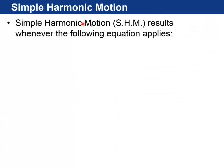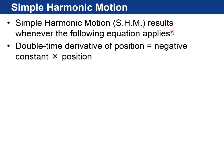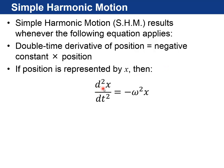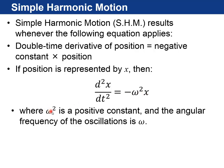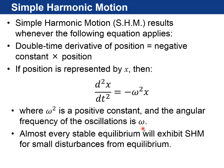So let's get started. Simple harmonic motion, SHM, results whenever the following equation applies. The double time derivative of some position is equal to a negative constant times the position. So if you represent position by X, then the equation looks like d²x/dt² equals negative omega squared times x. So omega squared is that positive constant we talked about, and the solution is x is proportional to cosine of omega t. So the frequency, angular frequency of the oscillations is omega. Almost every stable equilibrium will exhibit simple harmonic motion for small disturbances from the equilibrium.